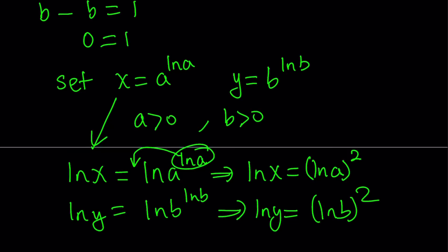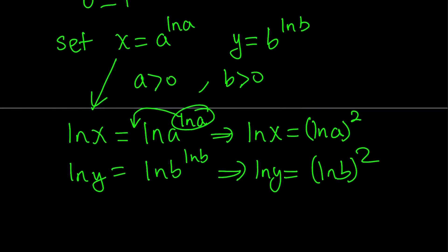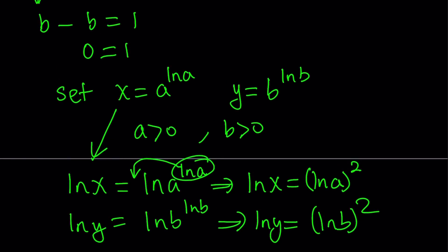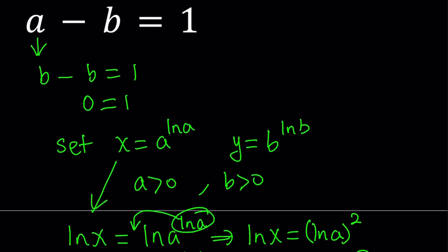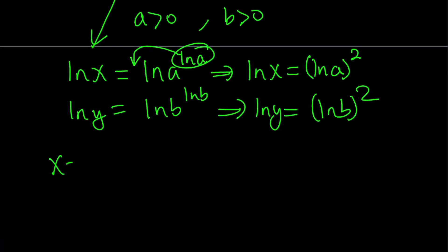Great. Okay, so now we have these two equations, right? And what do we know? Our first equation gives us that x equals y. So we do know that x equals y. And let's see what this implies. Then if x is equal to y, then ln x should equal ln y, right? And this gives us the following. ln x is ln a squared, and ln y is ln b squared. So we get this equality as a result.